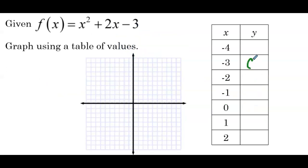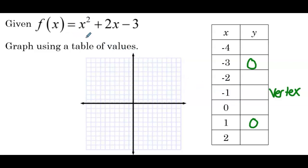In our table of values, we know that −3 gives 0 and 1 gives 0. Since we have two symmetric points, the axis of symmetry is x = −1, which makes that point the vertex. By symmetry, if we know the output of −4, we'll also know the output of 2. The vertex at x = −1 gives: (−1)² + 2(−1) − 3 = 1 − 2 − 3 = −4. For x = −4: 16 − 8 − 3 = 5, so by symmetry the output of 2 is also 5.